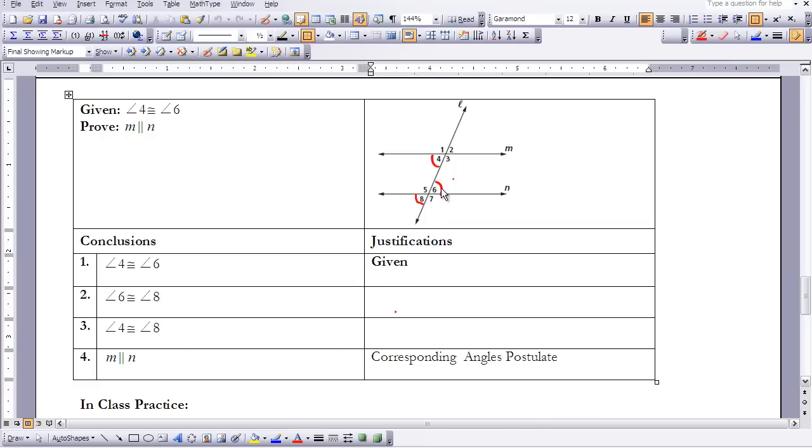And then looking at this, I know that six is congruent to eight because of the vertical angles theorem. Then I know that angle four is congruent to angle eight because of the transitive property.